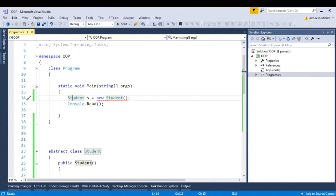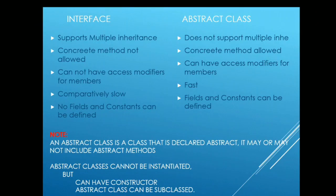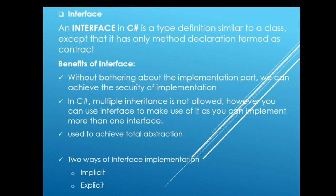So here are the key differences between interface and abstract class: interface supports multiple inheritance but abstract class does not. Interface cannot have concrete methods but abstract class can. Abstract class members can have access modifiers but interface members cannot. Interface is comparatively slower but abstract class is comparatively faster. In an interface you cannot have fields or constants, but in abstract class you can have fields and constants.